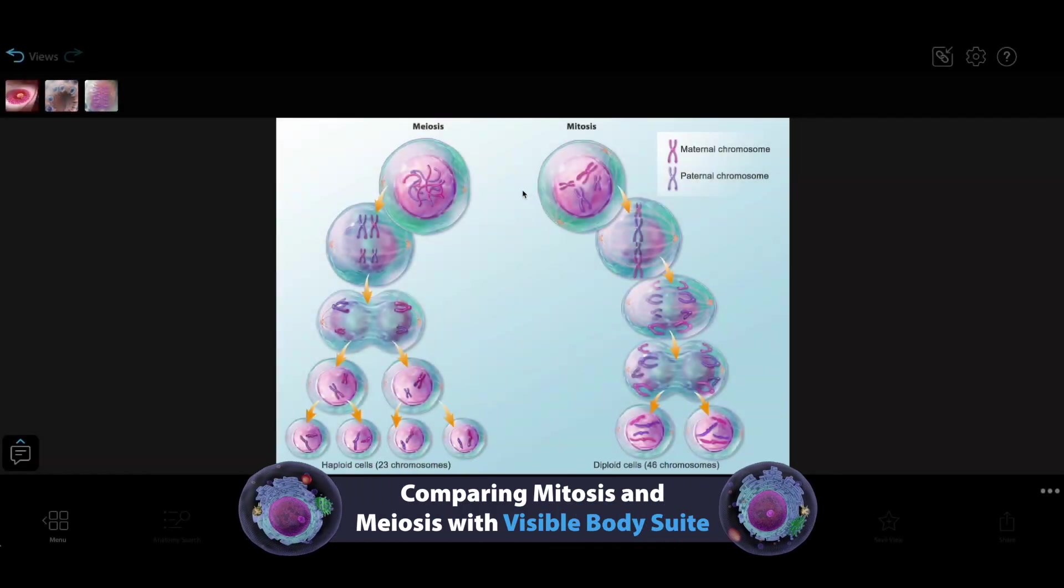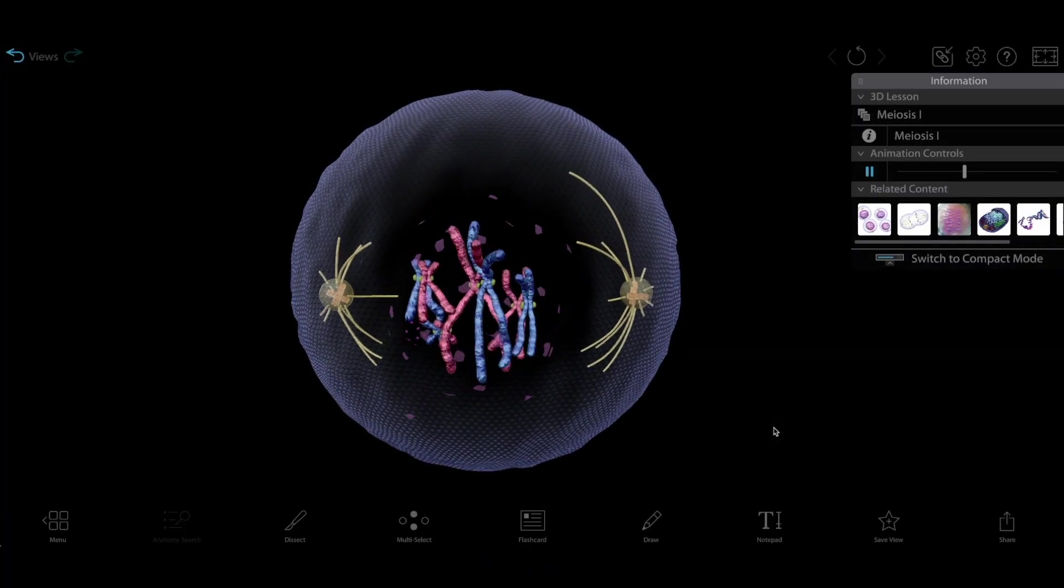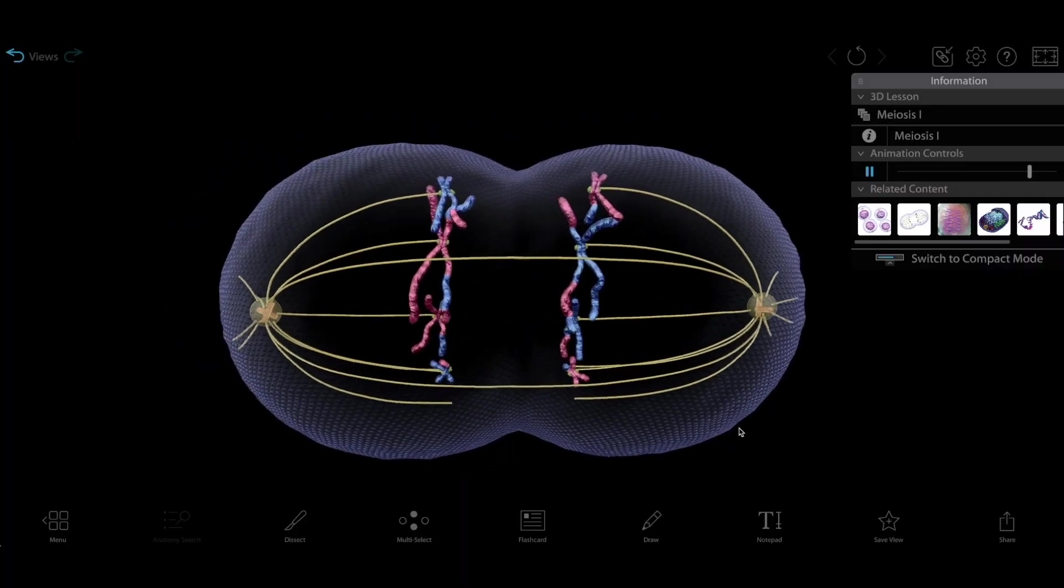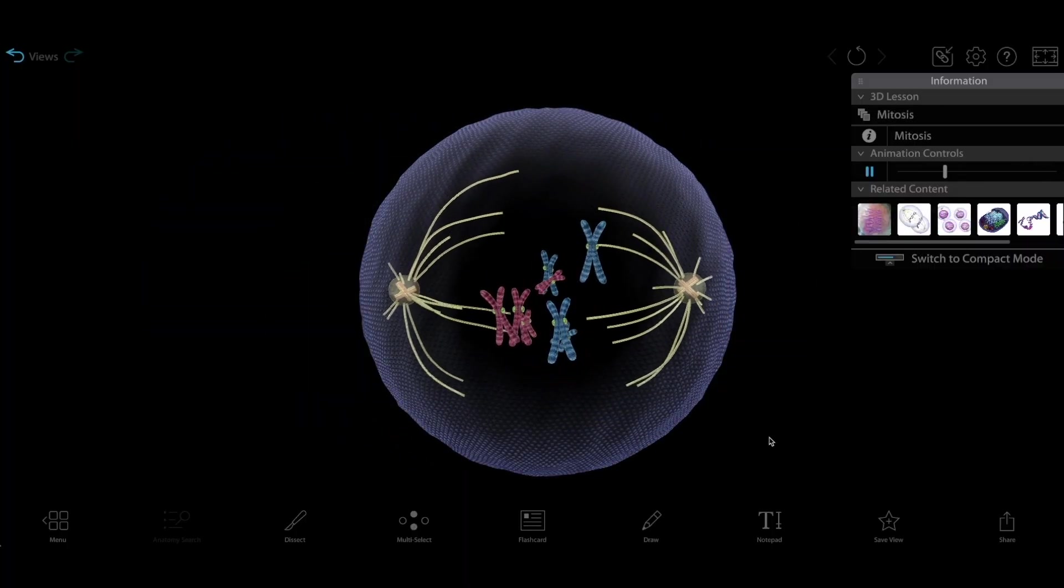Mitosis and meiosis are two of the most important biological processes students need to understand. They're similar in name and process, which makes it hard to tell them apart. But never fear, Visible Body's got you covered. We're going to use 3D resources in VB Suite to go over some of the key differences.